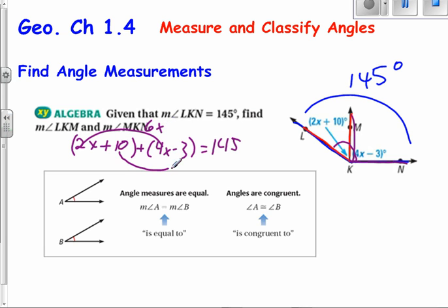So if we combine the X's, that gives me 6X, right? If we combine the constants, that gives me 7. So let's move 7 over to the right-hand side. So at that point, I have 6X is equal to 138. And if I divide both sides by 6, therefore, I have X is equal to 23.